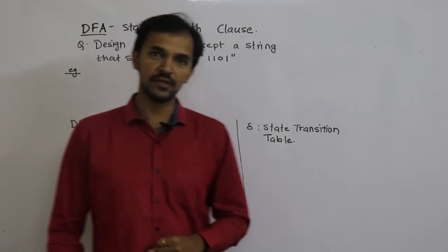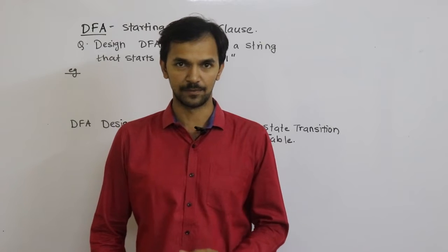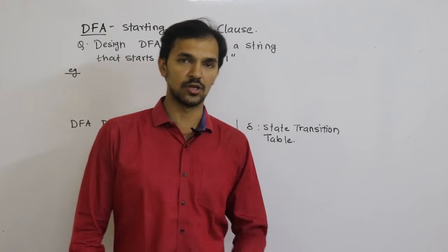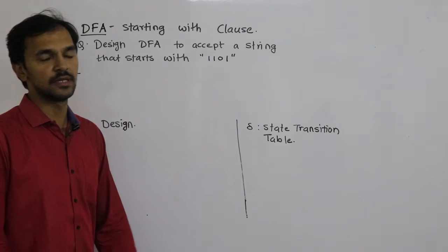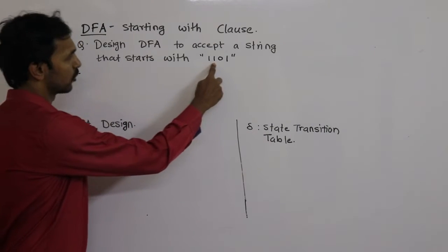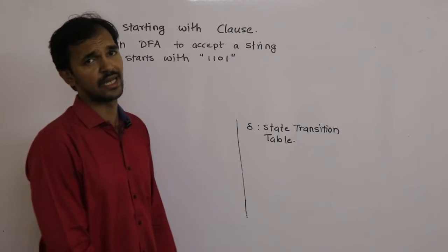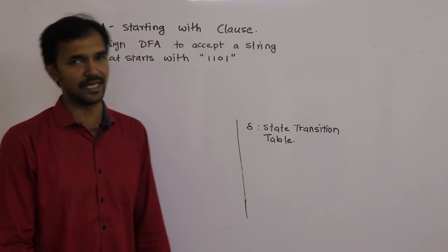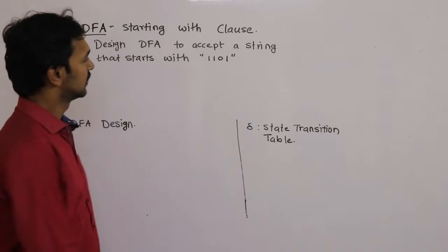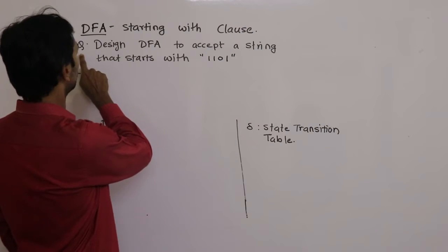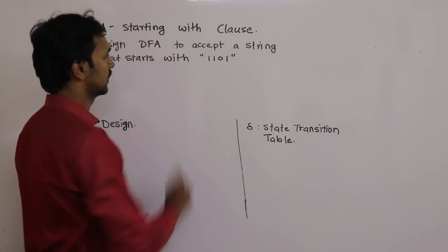In my earlier video, I had solved a problem having a 2-bit string with the same clause — that is, starting with a 2-bit string. Let's now solve this problem having starting with 4 bits. It can be 1100, it can be 0011, or it can be anything else. Let's solve the problem to design a DFA to accept a string that starts with 1101.